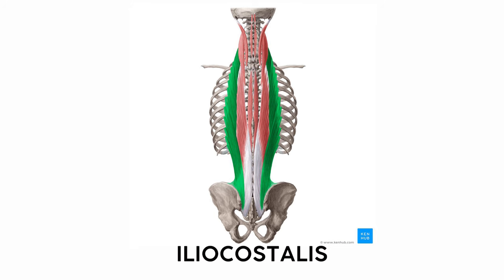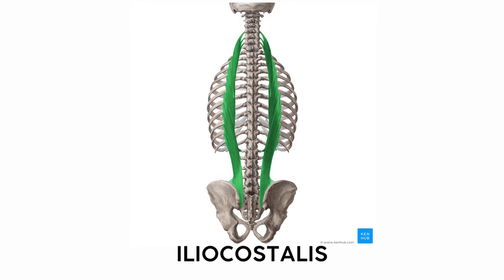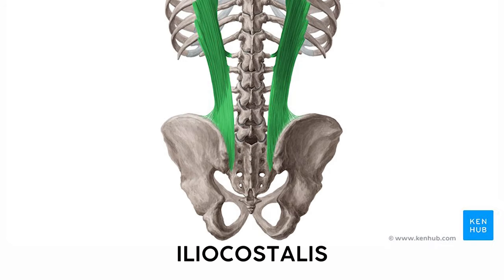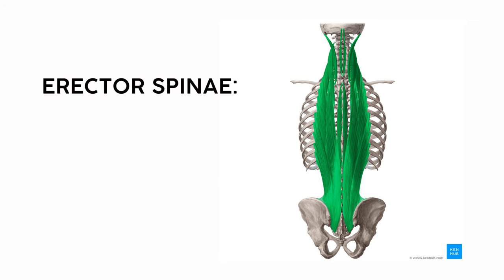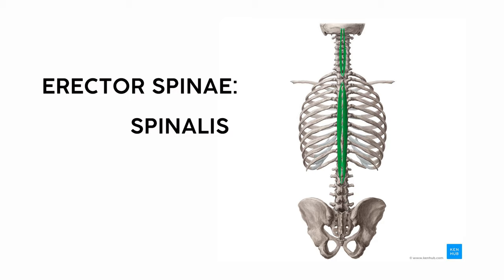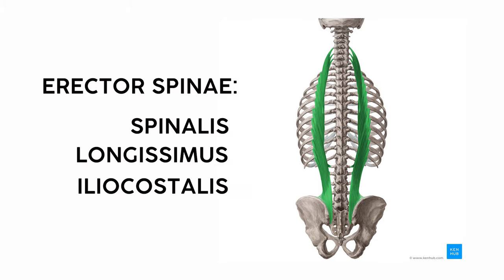Finally, the iliocostalis has one of those intuitive names. It connects the ilio and costal — the ilium to the ribs. You can see from its origin on the pelvis how lateral this thing is. So from medial to lateral, the erector spinae is the spinalis, longissimus, and iliocostalis.